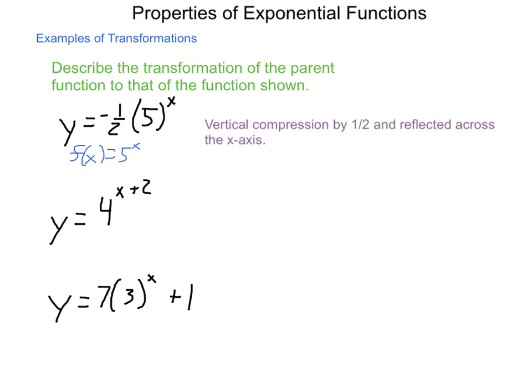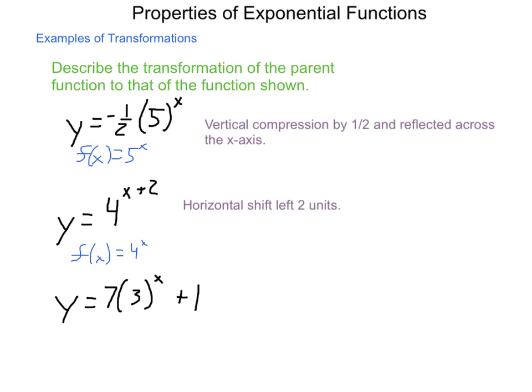Our second function we're looking at here is y equals 4 to the x plus 2. Our parent function, f of x equals 4 to the x, has that plus 2 added on to it. So what does that do to our function overall? Well, it provides us with a horizontal shift left 2 units, because in order to make this group of x plus 2 equal to 0, x would have to be negative 2, so that is left 2 units.